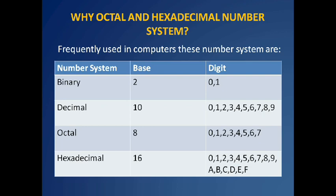Decimal has base 10 with digits 0 through 9. Octal has base 8 with digits 0 through 7. Hexadecimal has base 16 with digits 0 through 9 and letters A, B, C, D, E, and F. If you understand these number systems, you will understand how a computer converts each number or character into binary and performs the required operations.